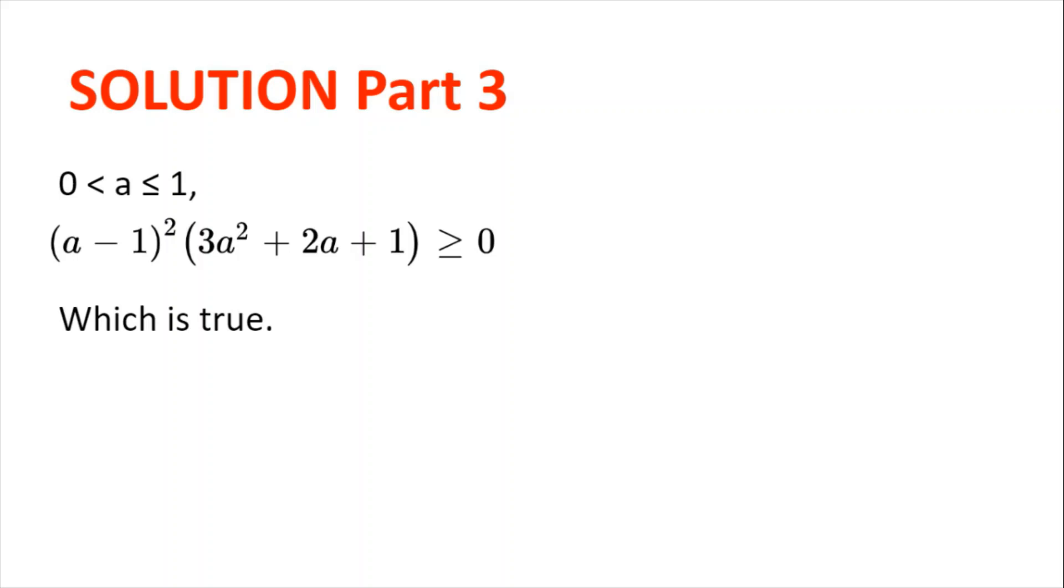So, what we get is (a - 1)² ≥ 0, and 3a² + 2a + 1 > 0. So, the whole of the left hand side is greater or equal to 0, with equality when a = 1.